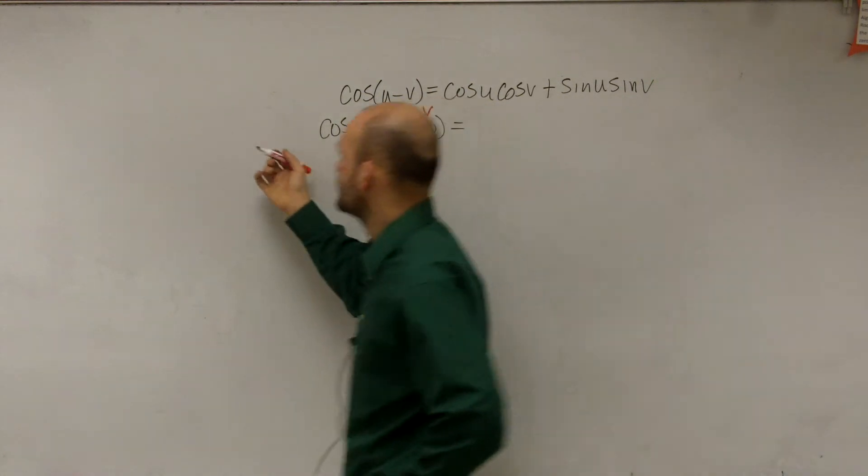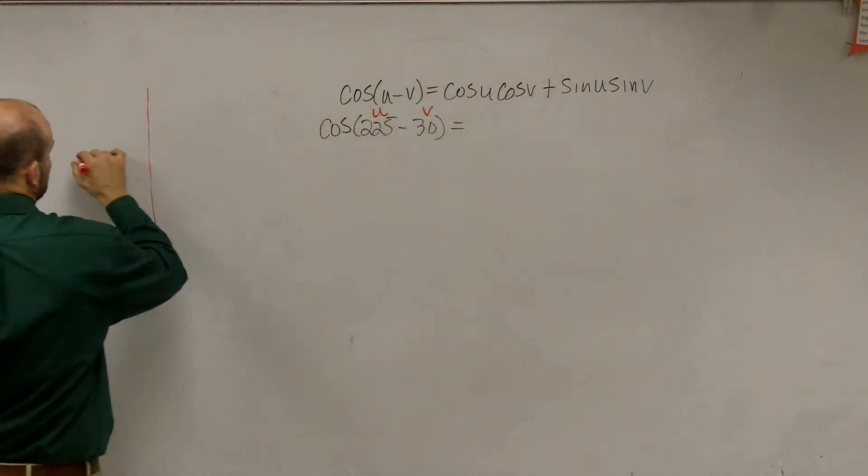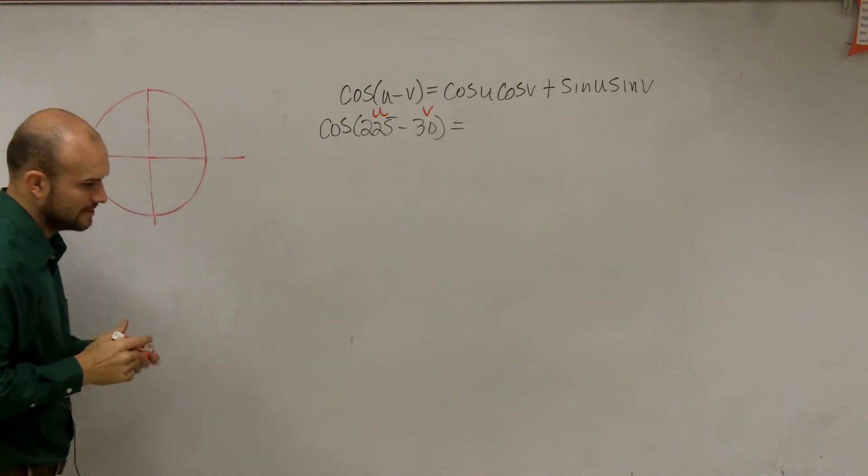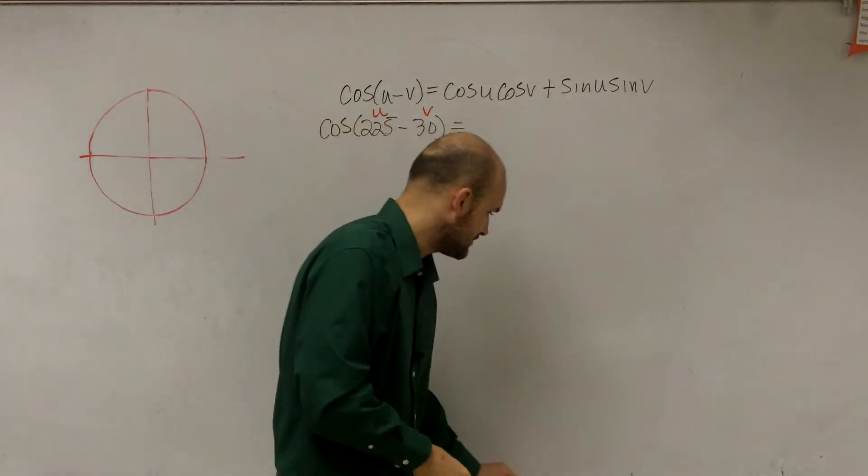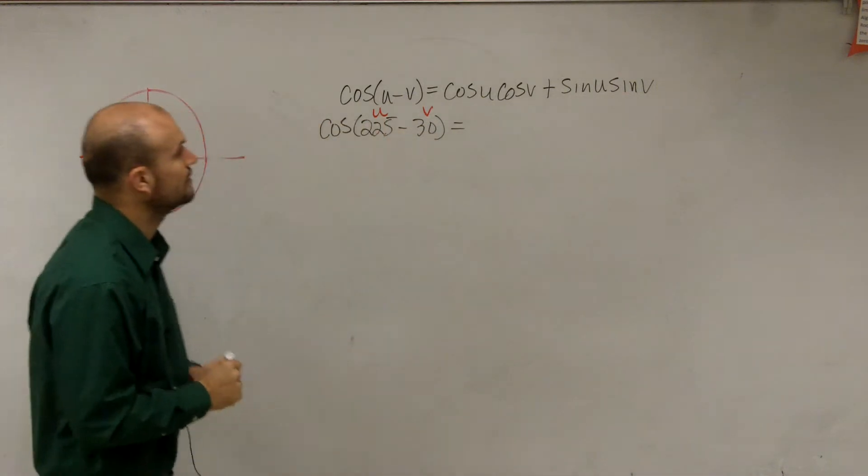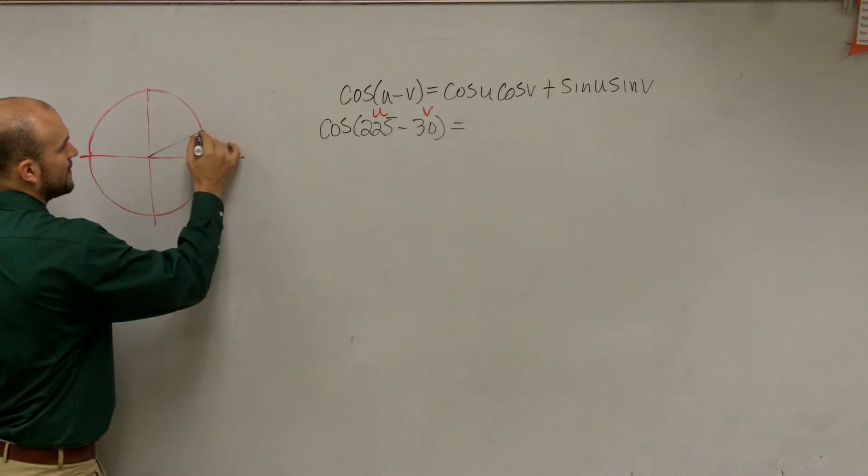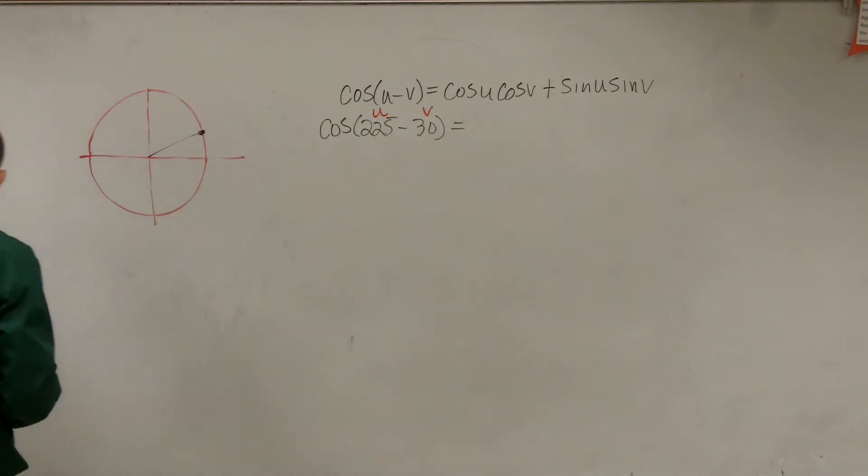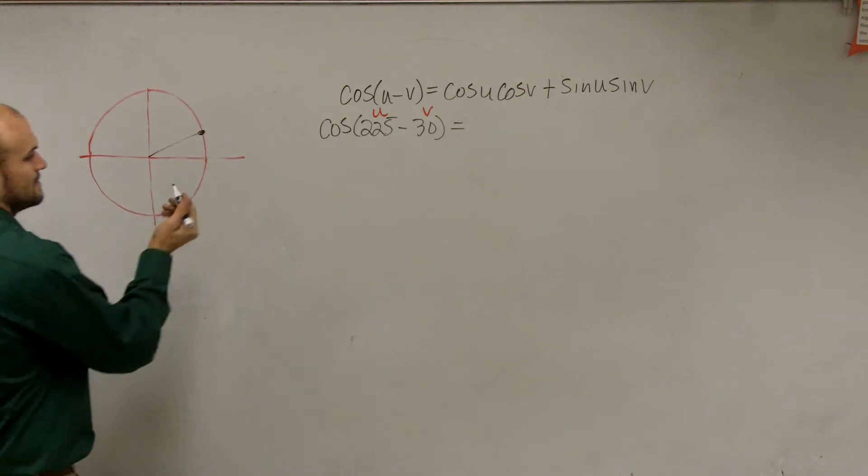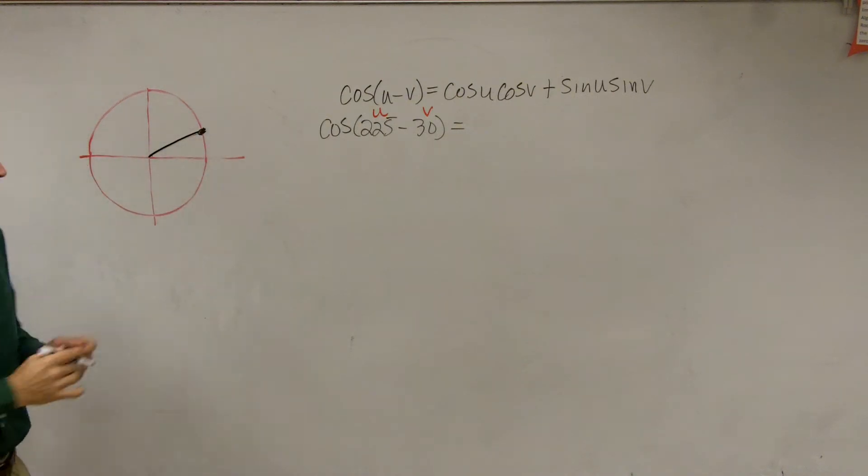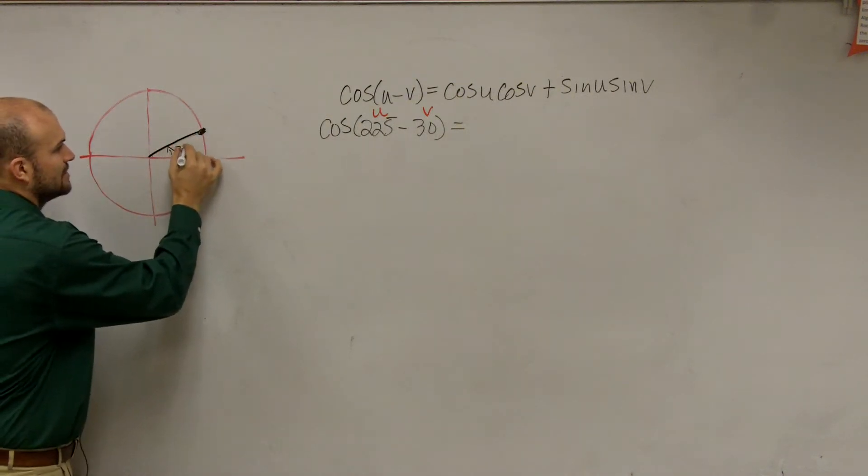So we're going to want to go back over to our unit circle and let's plot our two angles here. So we have 30 degrees, which is going to be here. So we have 30 degrees, right? Angle is 30 degrees.